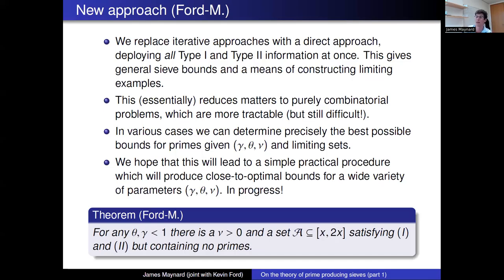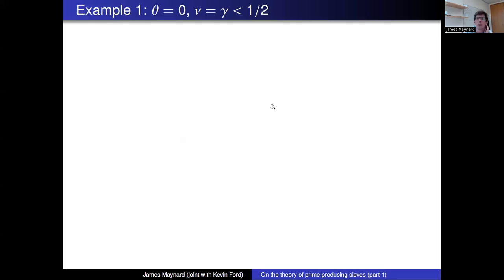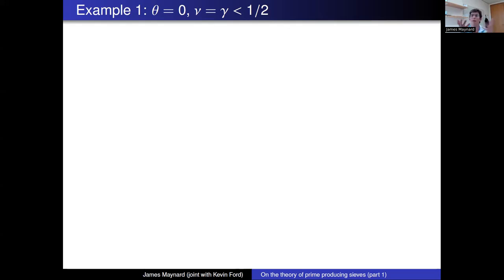One highlight theorem: regardless of parameters, taking gamma arbitrarily close to 1 with sufficiently small type two information, you can still produce sets A satisfying both the type one and type two conditions but containing no primes at all. This gives explicit no-go examples in the spirit of Selberg, showing you always need a fairly substantial amount of type two information if you hope to produce primes using these methods.